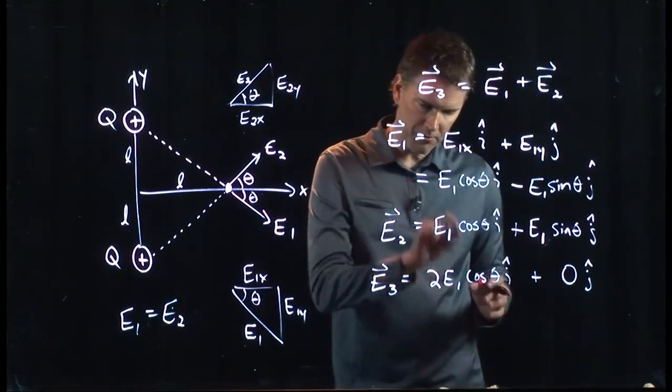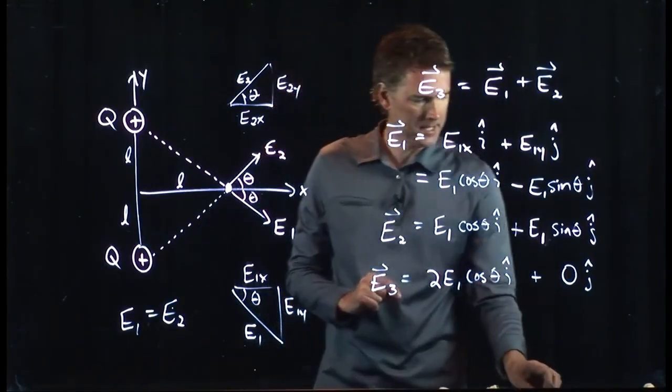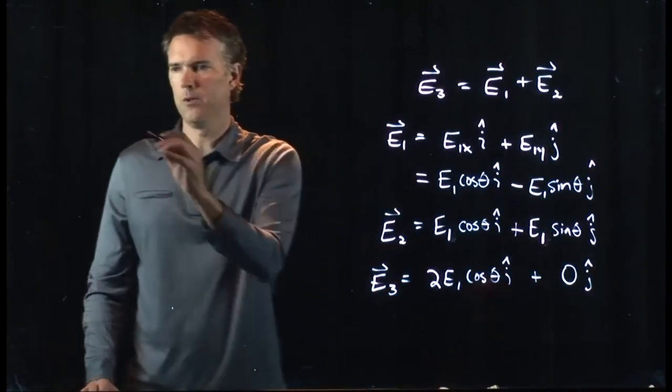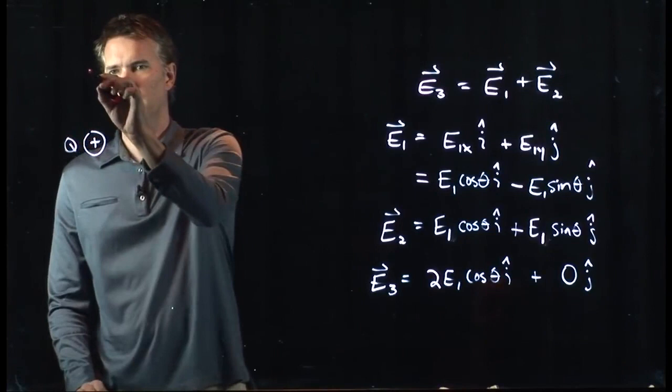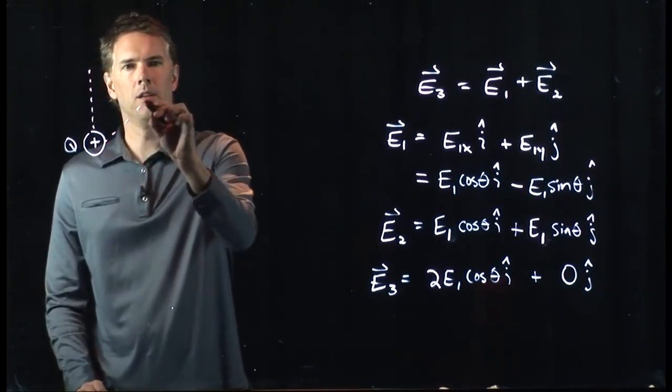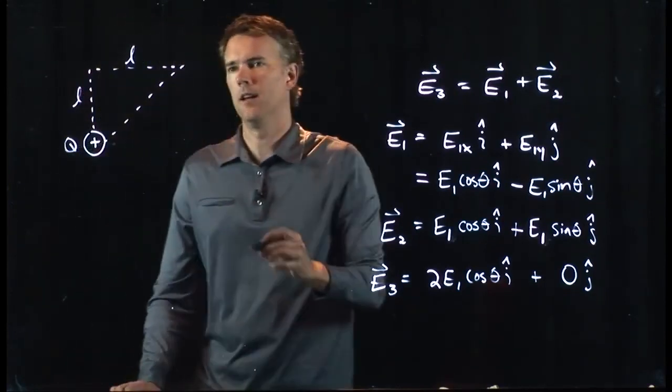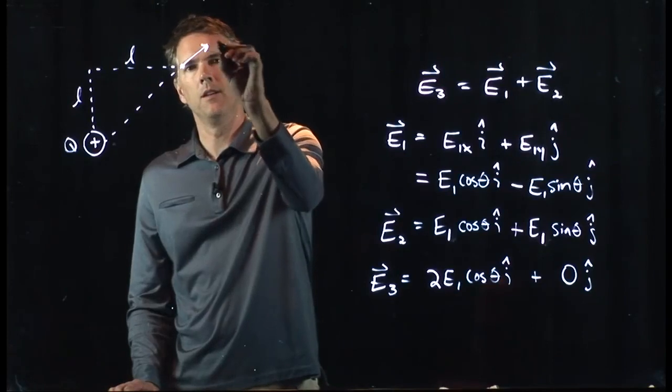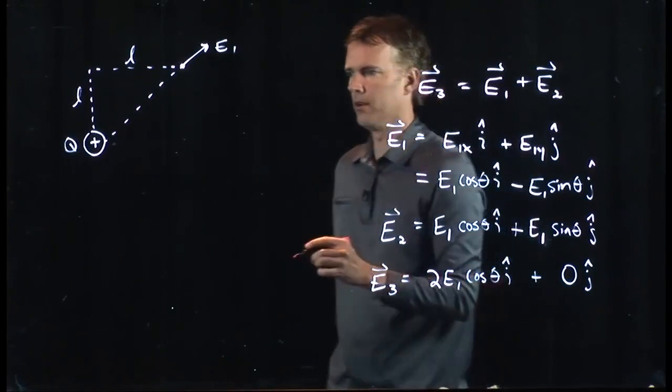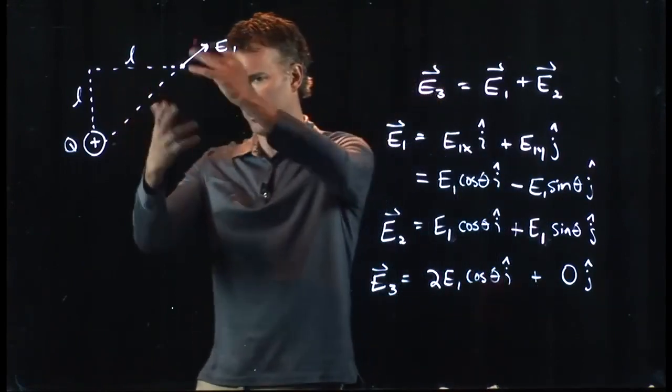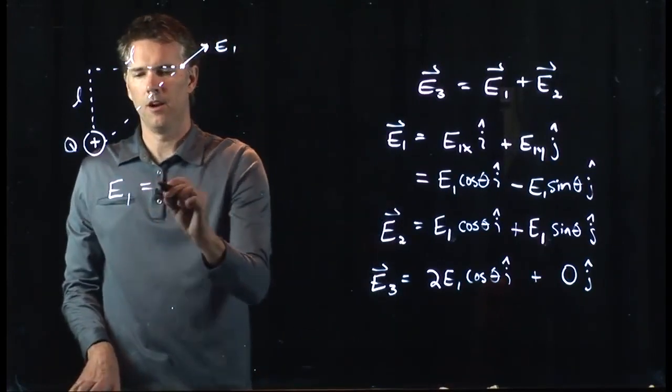And now we're nearly done. The only thing we need is the strength of E1 and that angle theta. So let's put that together now. So let's redraw the picture just for one of them. We've got a Q and it was L on the top, L on the side. There's our point. That was our E1. Okay. And we need to calculate the strength of E1. It doesn't really matter if that was E1 or E2 since it's symmetric. It's going to have the same strength.